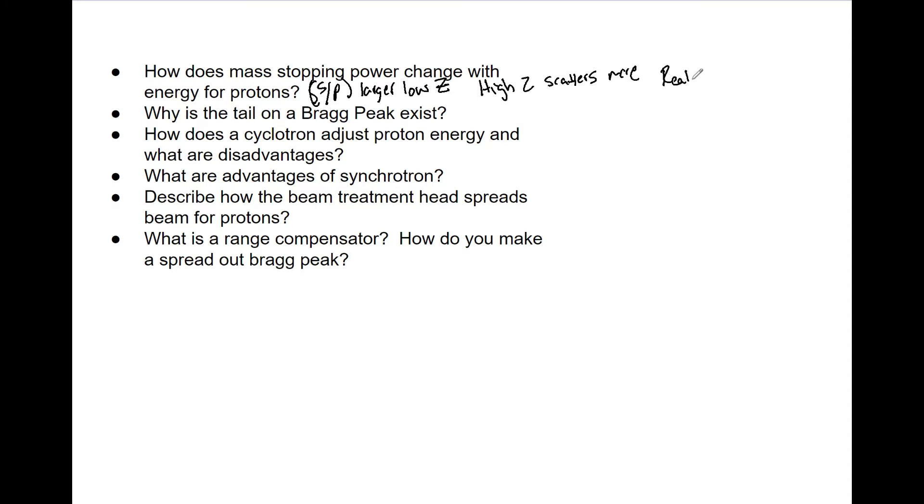Now, why is there a tail on a Bragg peak? Because there is energy loss straggling near the end of their range. That could be a whole video in itself, and I'm sure you know the basis of Bragg peak. I'm not going to jump too deep into that, but know Bragg peak and everything about it.